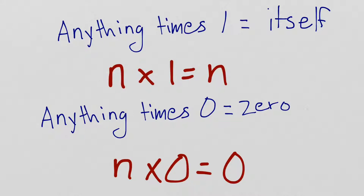So, we went through that pretty quick. But, here it all is in a nutshell. Anything times one equals itself. And, we write that n times one equals n. So, that means that anything times one is going to be equal to itself.